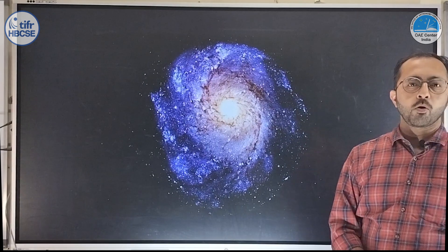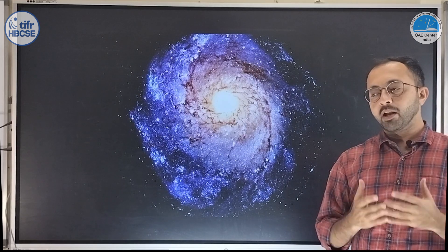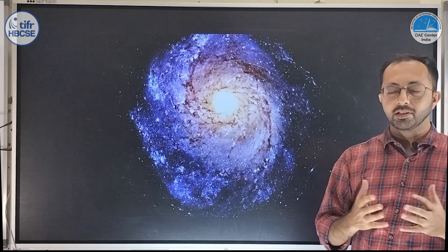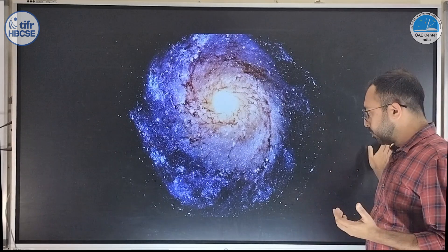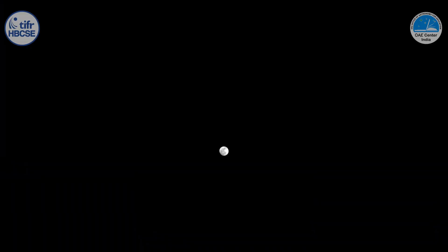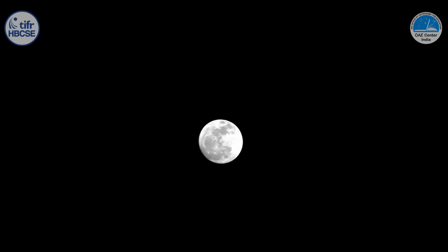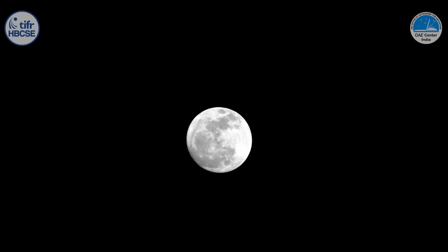When we talk about celestial objects — let them be galaxies, moons, planets, etc. — we need to see them clearly. By clearly, I mean we need to zoom in and see the details on these objects. For instance, for the moon, we need to see the surface features: how the valleys look, how the mountains look. For this we need a telescope.